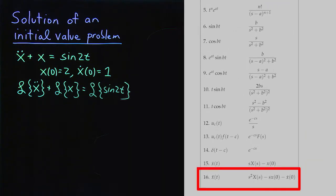To Laplace transform the second derivative of x, we use line 16. So that will be equal to s squared times capital X minus s times the initial value of x, which is 2 — so minus 2s — minus x dot of 0, which is 1.